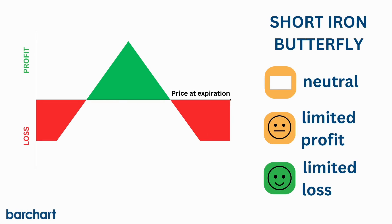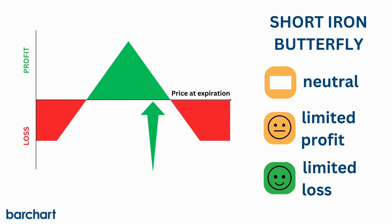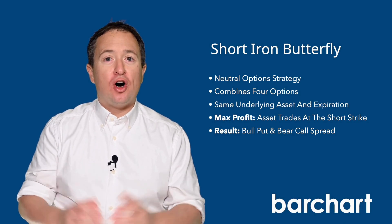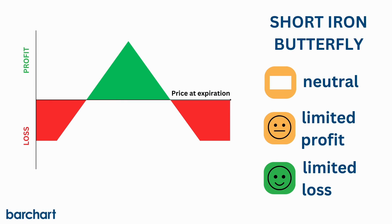The goal of a short iron butterfly is for the underlying asset's price to trade between the breakeven points at expiration. If that happens, you'll earn a profit. Maximum profit will occur if all of the options expire worthless, and that'll happen if the underlying asset trades at precisely the middle strike price at expiration.